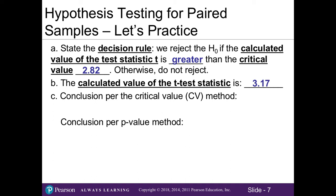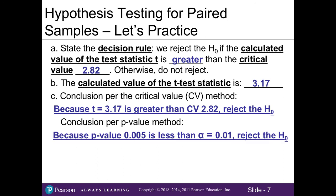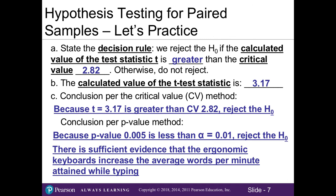The calculated value of our test statistic from the Excel output was 3.17 (rounded). Using the critical value method, since 3.17 is greater than the critical value of 2.82, we reject the null. Using the p-value method, our p-value of 0.005 is less than our alpha of 0.01, so we again reject the null. Whether you use the critical value method or the p-value method, you reach the same decision: reject the null. In other words, there is sufficient evidence that ergonomic keyboards increase the average words per minute attained while typing.